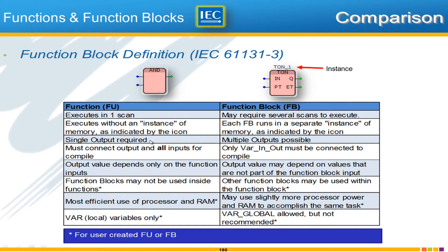Another property of a function is the single output. Every function will have just one output, while a function block may have one or more. You must also connect all outputs and all inputs for a function to compile — you can't leave any disconnected. This is not the case with a function block; the code will compile if you don't connect outputs or certain inputs, though some inputs may be required. You won't get a successful build with a function if you don't connect all inputs and the output.